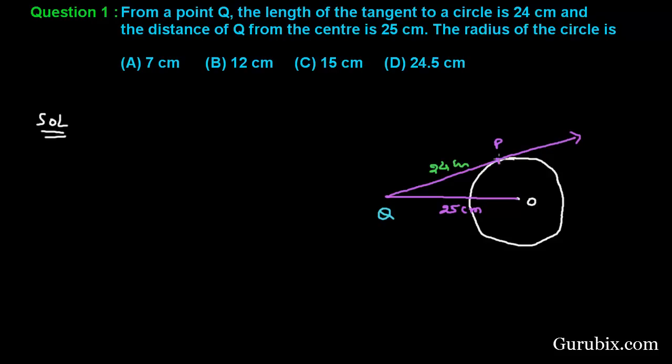We have to find the radius of the circle, and the radius is PO. So this is given to us: QO equals 25 cm, PQ is given 24 cm.